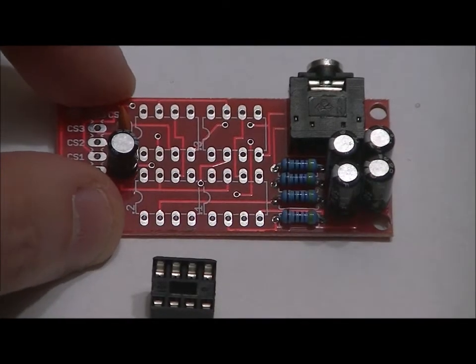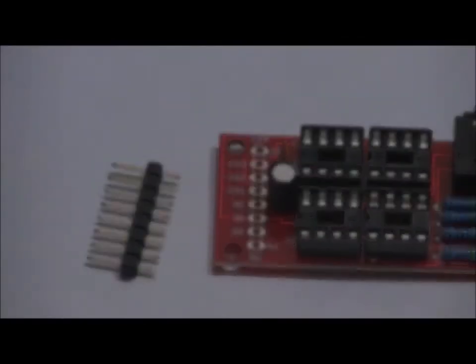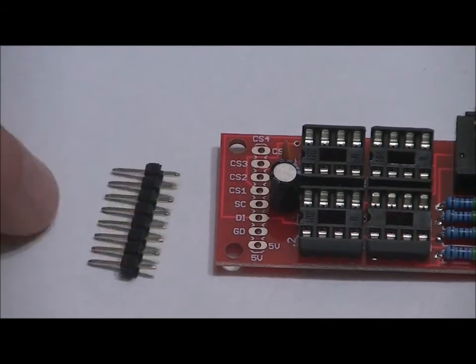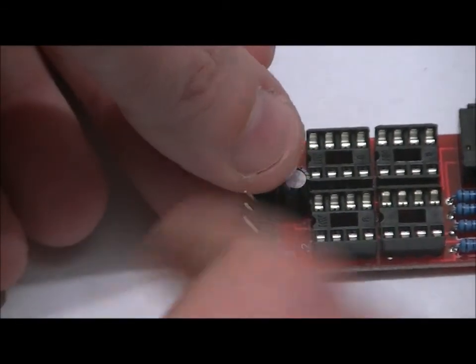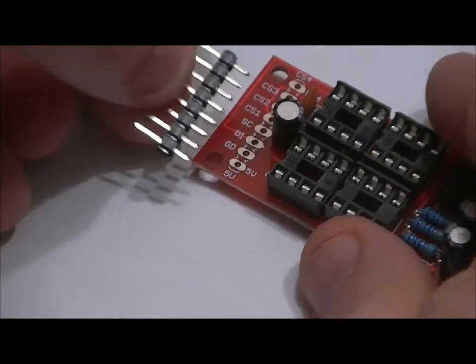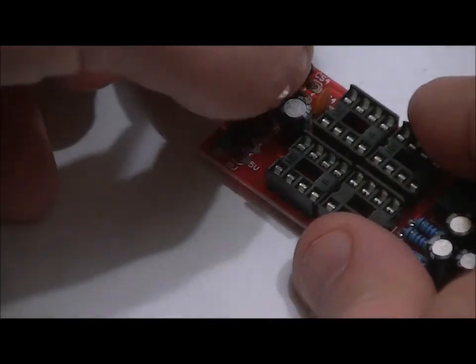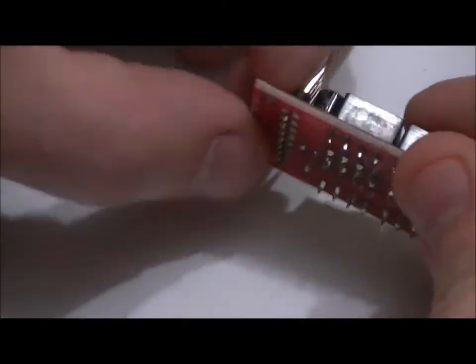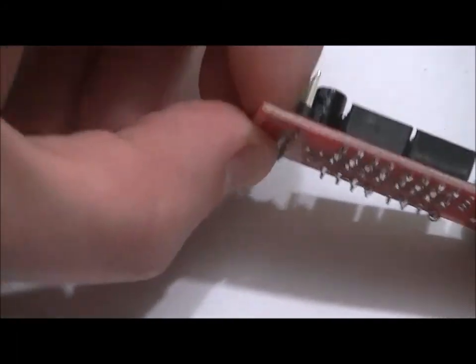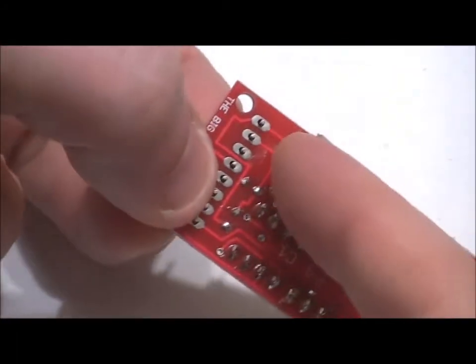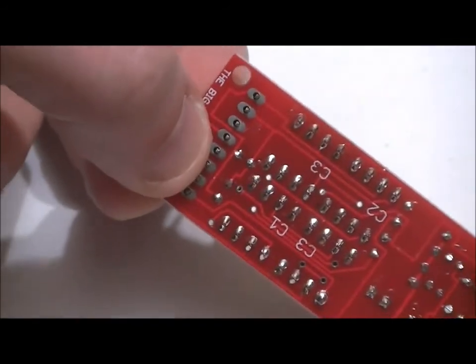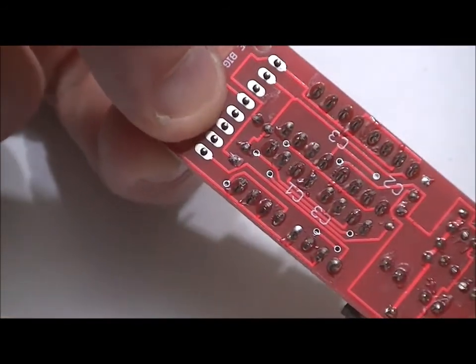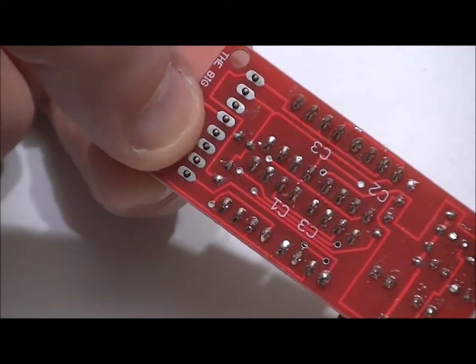Our last solderable component is the 8-pin header, and it goes right here. Place it in, make sure it's flush to the board. Typically what I like to do is line it up, use one nail to keep it at 90 degrees, and then I'll dab a little bit of solder on one of the end pins. And then once it's cooled, I'll turn it around and I'll solder the rest of the pins together. Make sure there are no shorts.